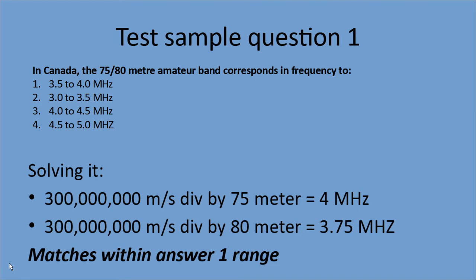Actual question from the test: in Canada, the 75–80 meter amateur band corresponds in frequency to which of these four? Let's solve it. 300 million divided by 75 meters is 4 megahertz — we've got two answers with 4 megahertz. Now the calculation for the second value: 300 million divided by 80 meters is 3.75 megahertz. We've got a good match — it's right in the range of answer one.